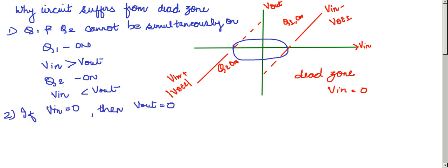And secondly, if VIN, that is input voltage, is equal to zero, then the output voltage VOUT must also be equal to zero.